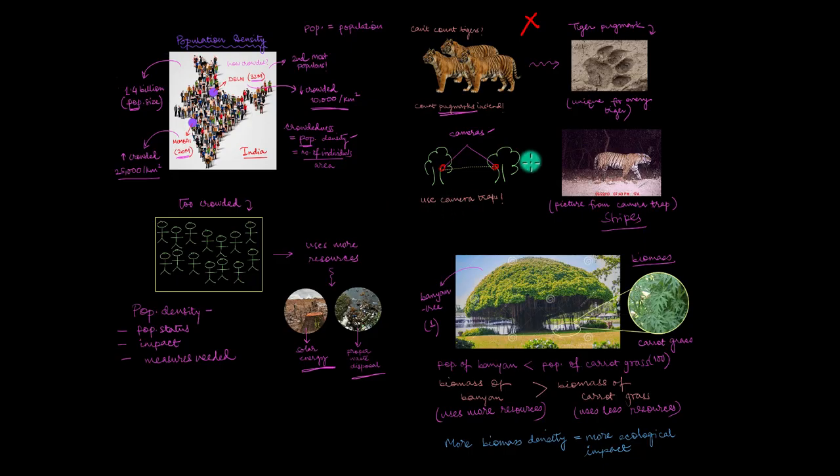So let's do a quick recap of whatever we have found out so far. Population density talks about the crowdedness of a place. And just because a place has a lot of people, doesn't always mean that it's crowded. If in case a place gets too crowded, then it ends up affecting the environment in a negative way. Which is why it is essential to keep a measure of population densities of various species. But sometimes measuring the population density through physical counting can become a headache. So we look for indirect approaches. Like counting the paw prints of tigers or measuring the biomass density of a species for better understanding.